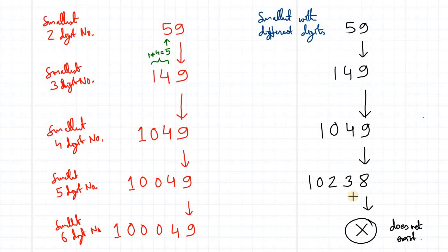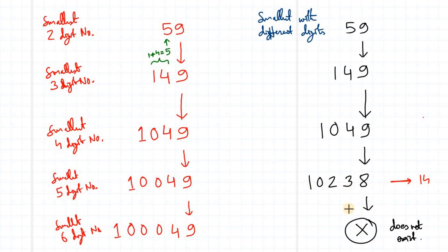For smallest numbers with different digits: 59 and 149 and 1049 all have different digits, so those are fine. But after 1049, things are different. For the smallest 5-digit number with different digits, I cannot keep using 9 because repeating it would violate the different-digits condition. So I put 8 in the ones place and rearrange so that larger digits are toward the right: for example, 1 plus 2 plus 3 plus 8 equals 14. Only up to 5 digits can the smallest number with different digits exist.